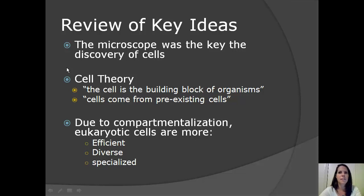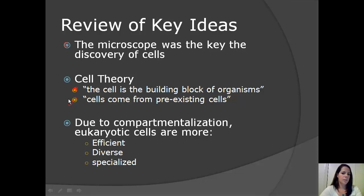Now for a quick review of our key ideas. The invention of the microscope led to the discovery of cells. The two main ideas of the cell theory are: number one, the cell is the building block of organisms, meaning to create a living thing you need one or more cells; and number two, cells come from pre-existing cells, meaning one cell divides into two cells. And finally, due to compartmentalization, eukaryotic cells are more efficient, diverse, and specialized than prokaryotic cells. That's the discovery of cells, the cell theory, and prokaryotic versus eukaryotic cells. Thanks for watching.